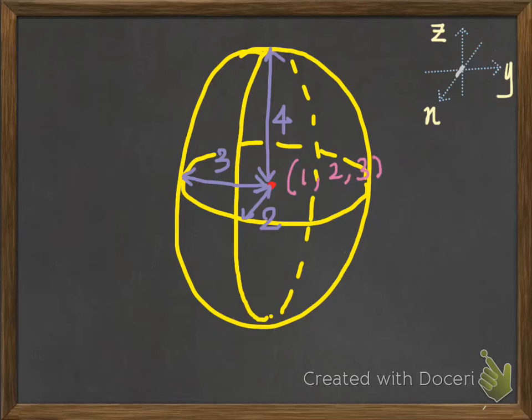So, from the origin, if we want to locate the point, then we will move along the x-axis for 1 unit forward, and then 2 units to the right. Lastly, 3 units upwards. And that red point, this particular red point, is the position of the center of the ellipsoid.